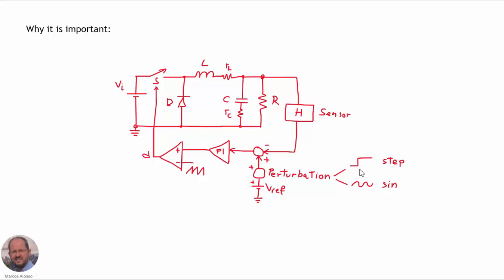If we apply a step transient, we can quickly change the output voltage of the converter, increasing or decreasing the voltage, and we want to know how this voltage is going to evolve when we apply this step transient at the reference. Another possibility is that we inject a sinusoidal perturbation into the reference, superposed to the reference level, so this perturbation is going to appear also superposed to the output voltage, and we want to know the amplitude and phase of this perturbation.